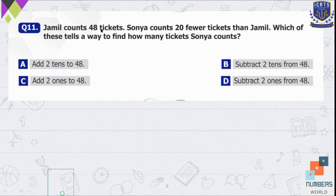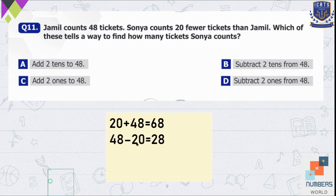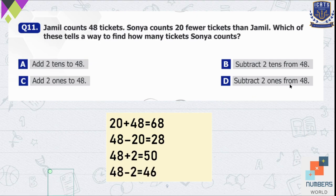Question number 11. Jamil counts 48 tickets. Sonia counts 20 fewer tickets than Jamil. Which option tells the way to find how many tickets Sonia counts? Option A: add 2 tens to 48, so 20 plus 48 equals 68. Option B: subtract 2 tens from 48, so 48 minus 20 equals 28. Option C: add 2 ones to 48, giving 50. Option D: subtract 2 ones from 48, so 48 minus 2 equals 46.